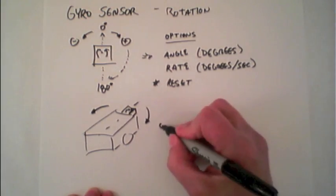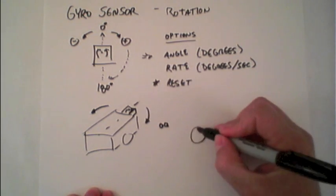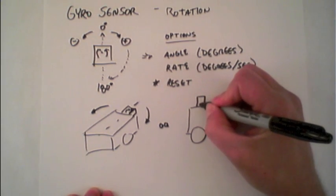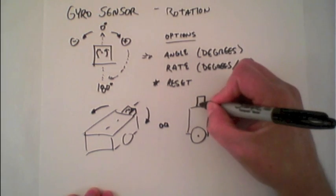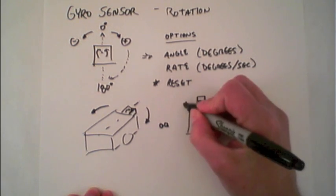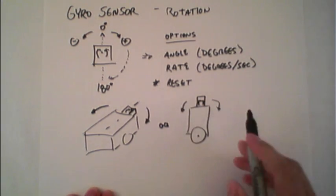Or, if you have a robot something like this that's balancing on a wheel, sort of like a Segway, you could use it to measure the degrees that the robot's tipping forward or backwards.